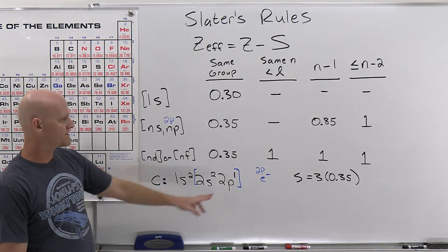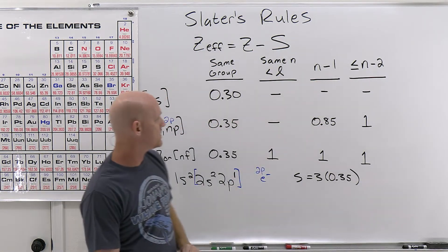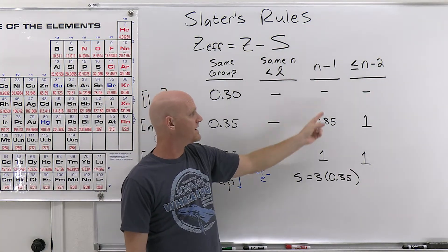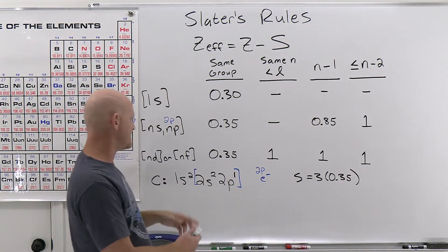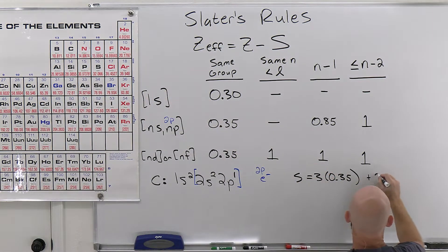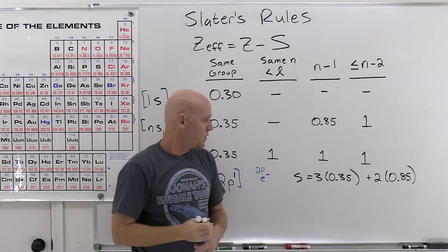And the 1s electrons compared to the 2p are in the previous shell, the n minus 1 shell. And so in this case, for an s or p electron, so anything in the n minus 1 shell contributes 0.85. And we've got two electrons in there.